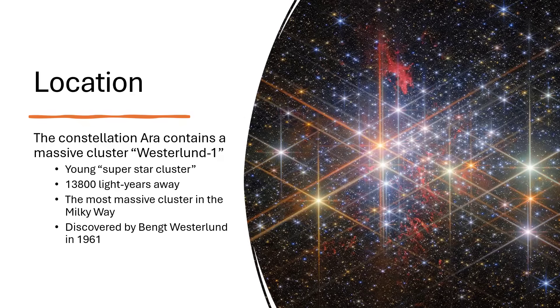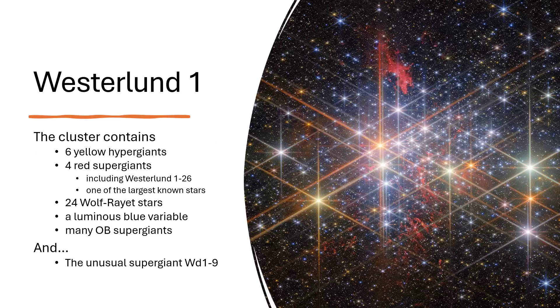I just love this picture on the right hand side here, showing the amazing stars within the cluster. When we look at it and they analyse all those stars, what we find is that there are some real powerhouses. There are six yellow hypergiants, quite unusual, four red supergiants, including Westerland 1-26, one of the largest stars we've ever seen, 24 Wolf-Rayet stars that have blasted away their outer hydrogen envelope, exposing the deeper helium layers.